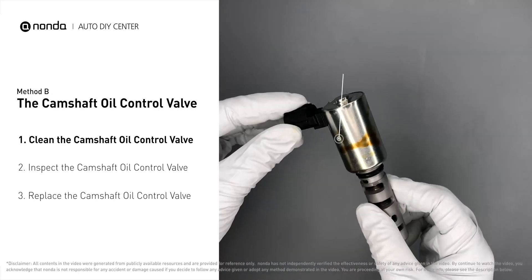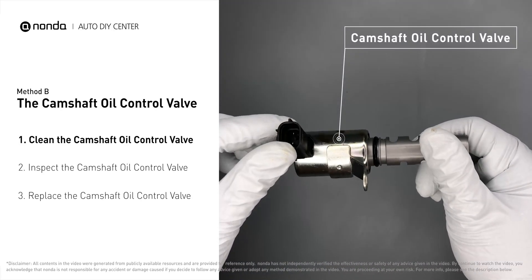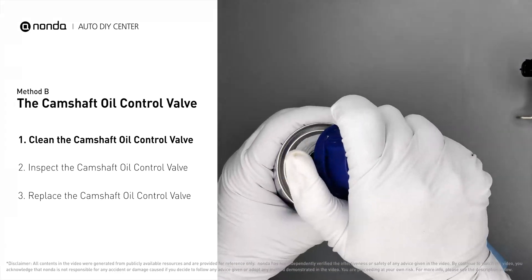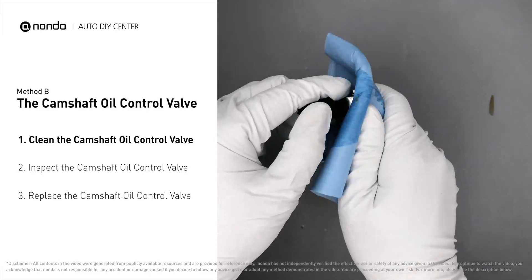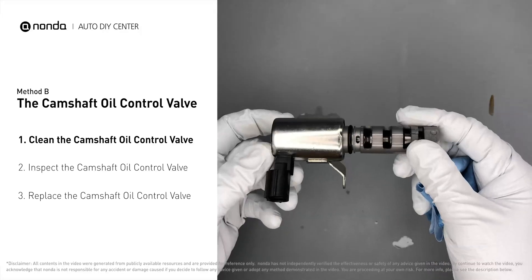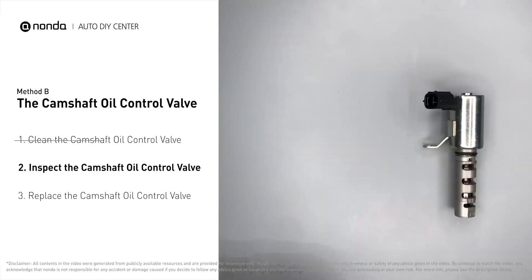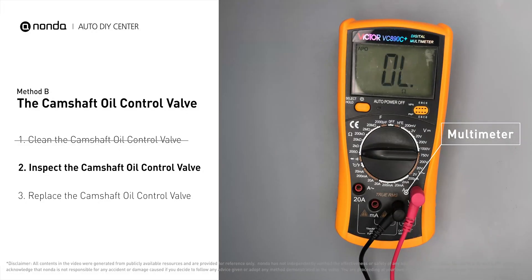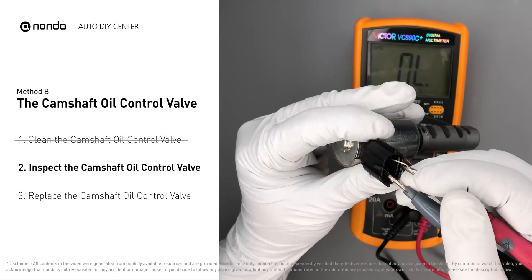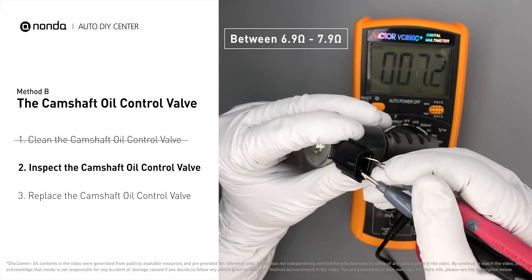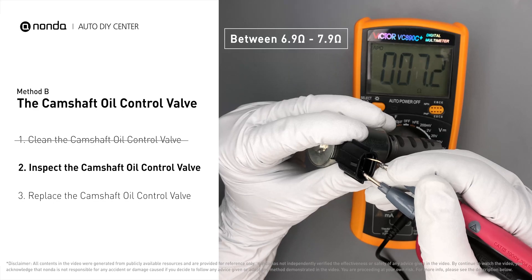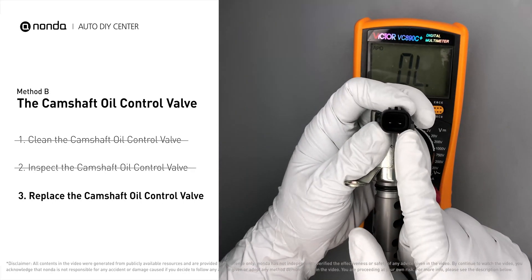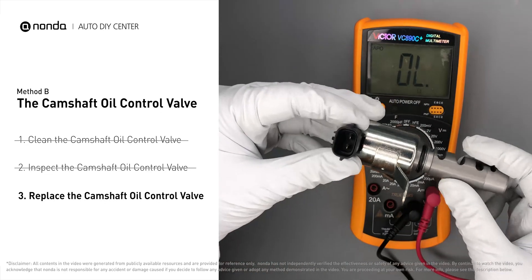Method B: the camshaft oil control valve. First, carefully remove the camshaft oil control valve from the engine. Use a valve cleaner to clean it. Then use a multimeter to test the camshaft oil control valve — at an ambient temperature of 68 degrees Fahrenheit, the valve resistance should be between 6.9 ohms and 7.9 ohms. If you do not get a reading within this range, the camshaft oil control valve is faulty and needs to be replaced.